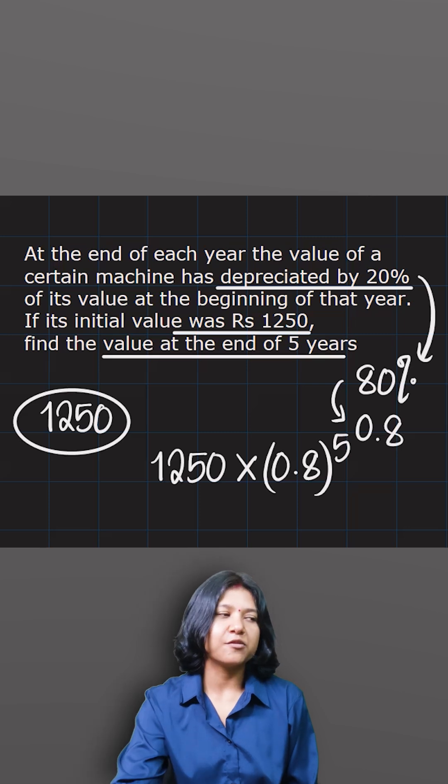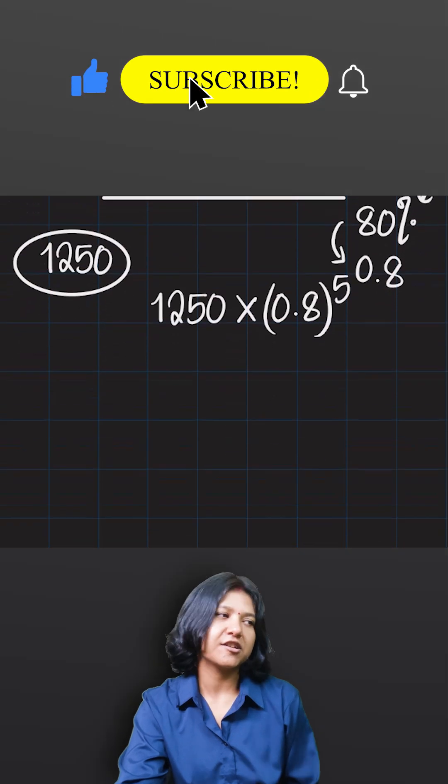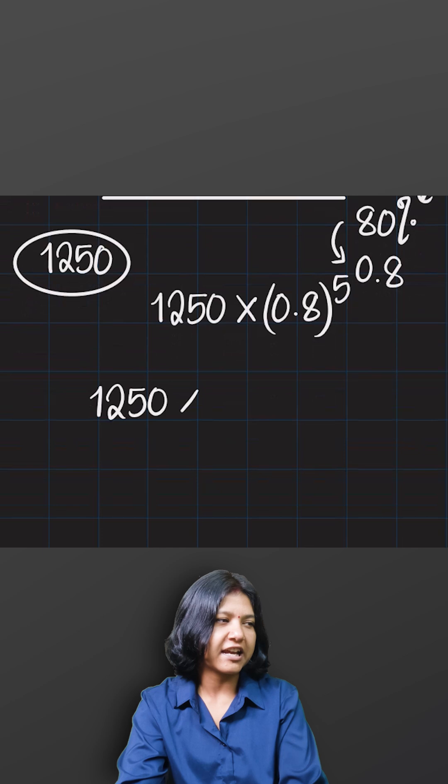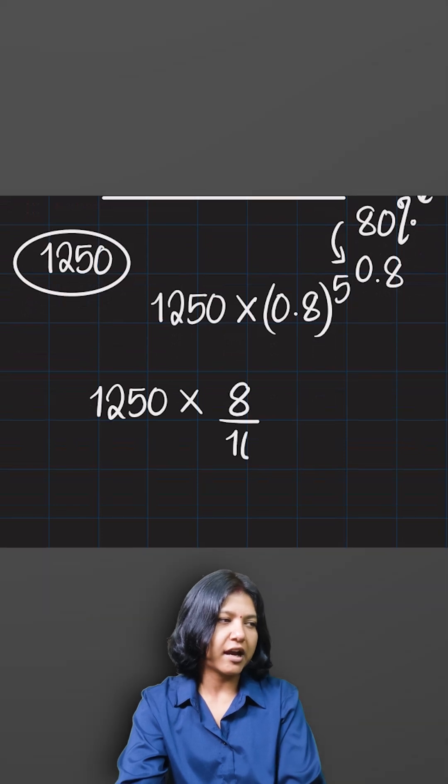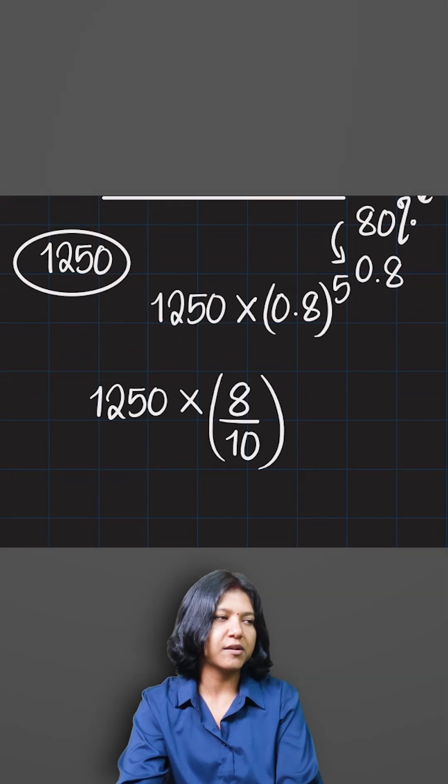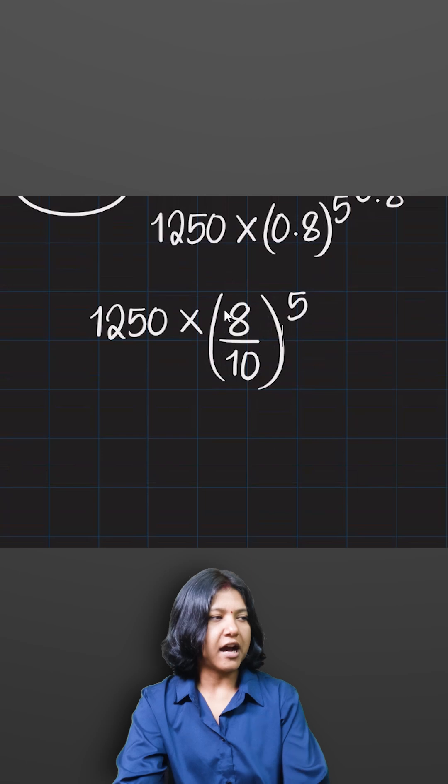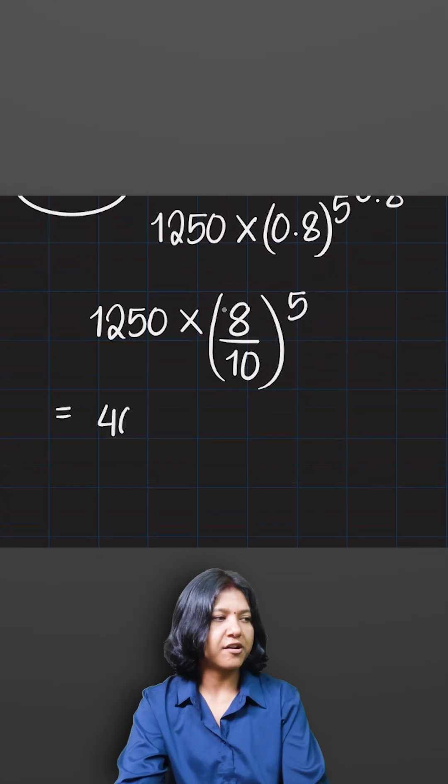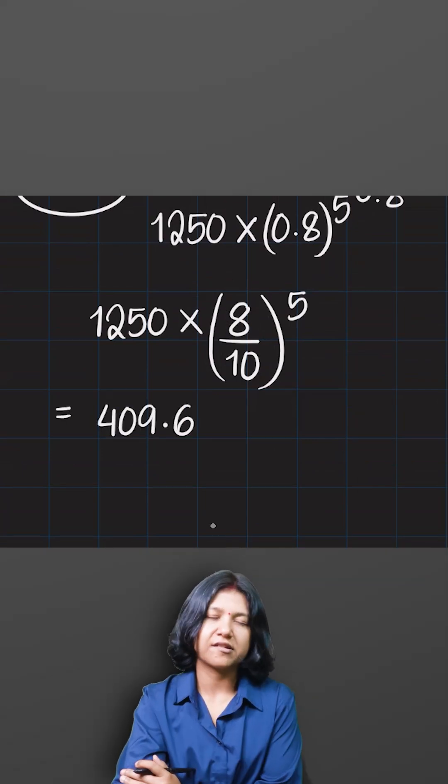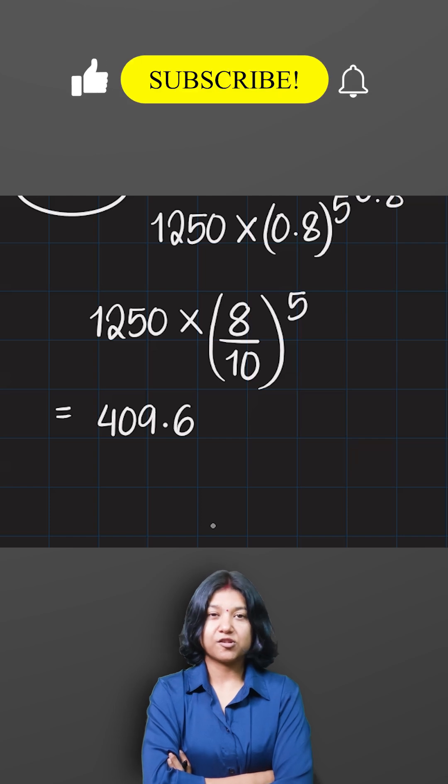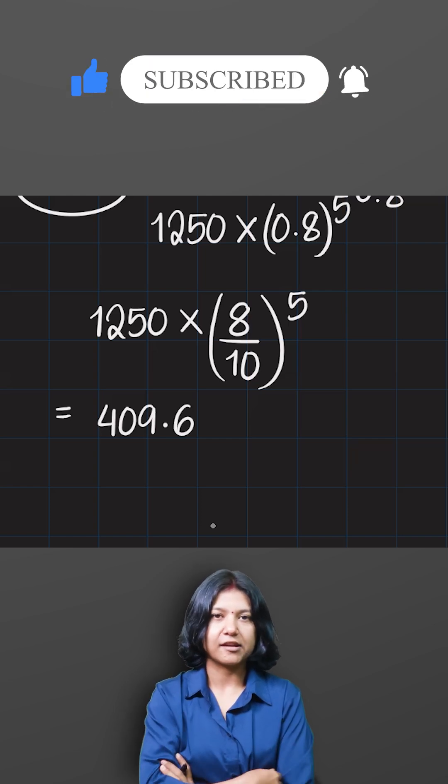So this is what you have to do. And once you're done with this, you will do your calculation. So 1250 times 8 upon 10 to the power of 5, you can go ahead and do your calculation in the best way possible. So eventually, the answer here will simply be 409.6. This is how you approach questions based on problems on geometric series or geometric sequence.